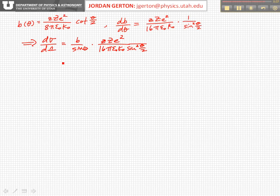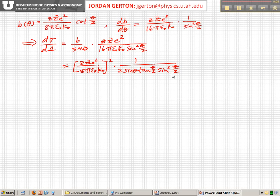So we plug in for b, and this becomes zZe² over 8π ε₀ k₀, and this gets squared because it comes in both db/dθ and b, and then times this denominator: sin θ, sin² θ/2.